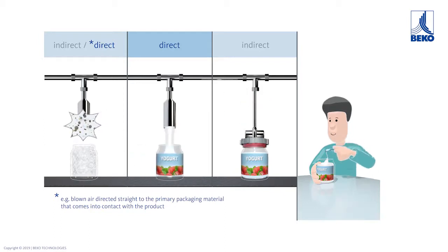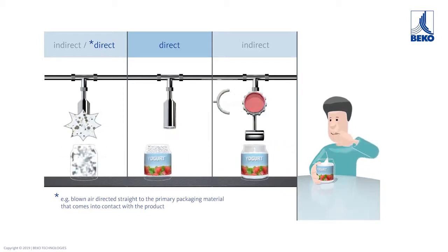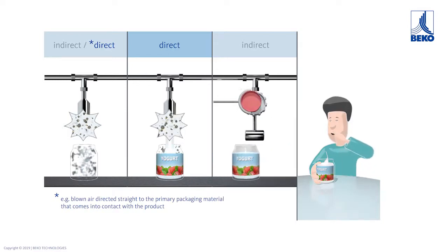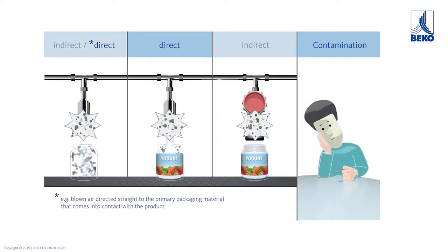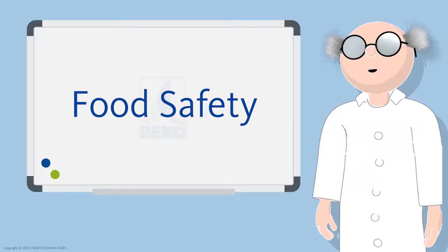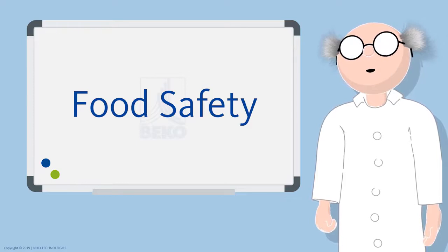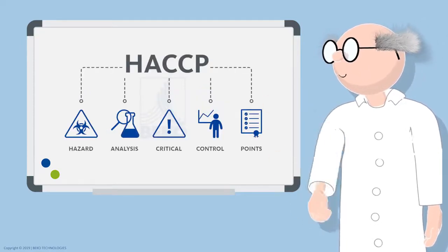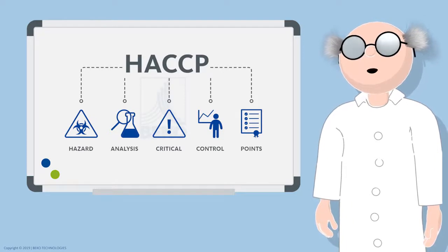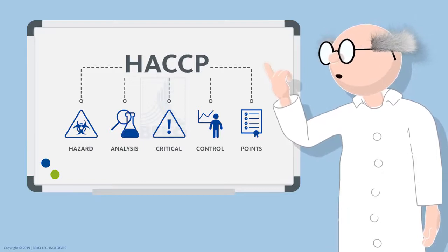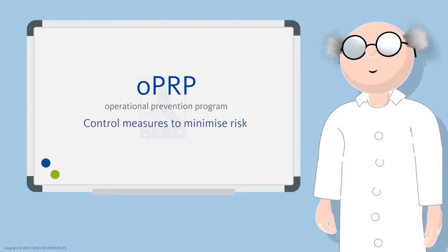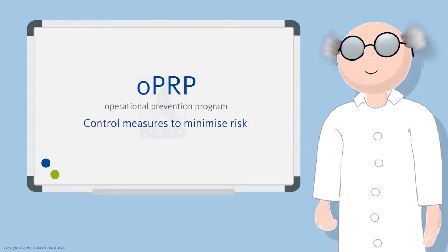Contamination by microorganisms, oils, or particles can contaminate the end product in both indirect and direct contact and cause an enormous loss of quality. There are different and effective approaches to ensure food safety, for example the HACCP, a management system for hazard analysis and definition of critical control points, as well as additional processes like the operational preventive program OPRP.